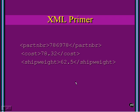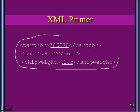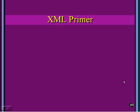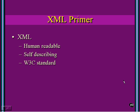What if I show you the same numbers like this? Well, suddenly everything's changed. We can now tell 786978 is a part number, 78.32 is the cost, and 62.5 is obviously the pounds or some sort of metric measurement — it's the ship weight, that's what it weighs for shipping. This is XML. It is a markup language that causes the data to be self-describing. It's human readable, it's self-describing, and it's a World Wide Web Consortium standard.